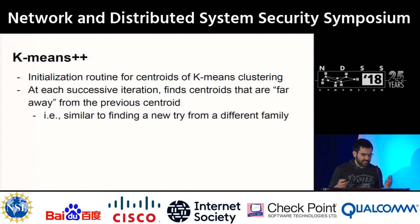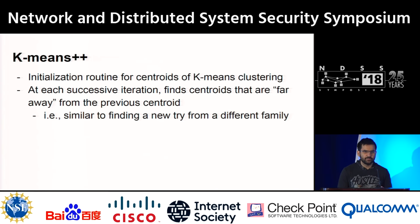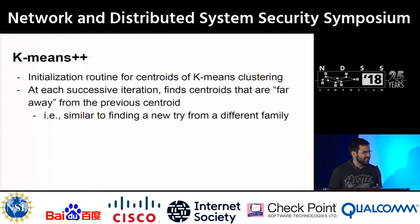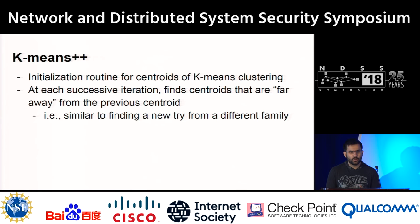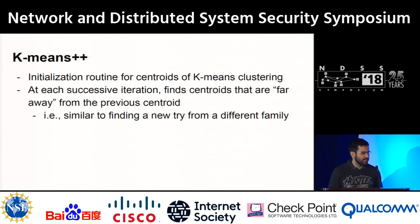This algorithm is actually very similar to how k-means++ works. k-means++ is an iterative initialization algorithm for k-means clustering where at every successive step it finds a centroid that is far away from all previously seen centroids. This means every try is like sampling from a different family, maximizing coverage.